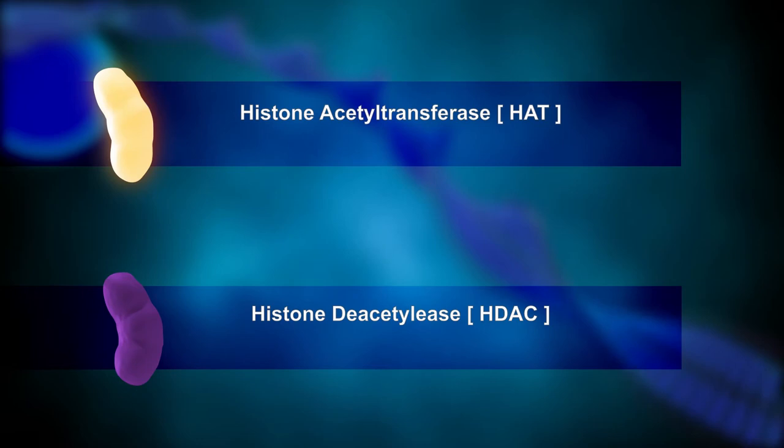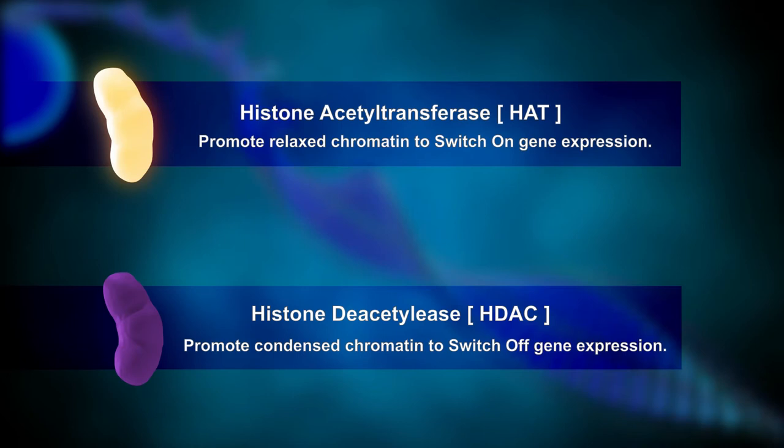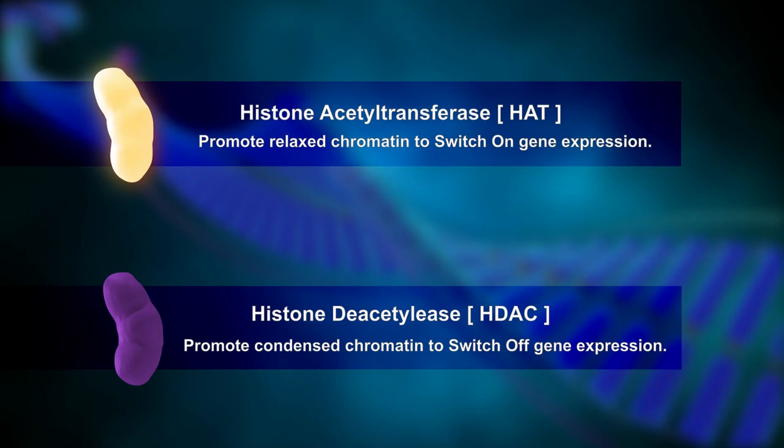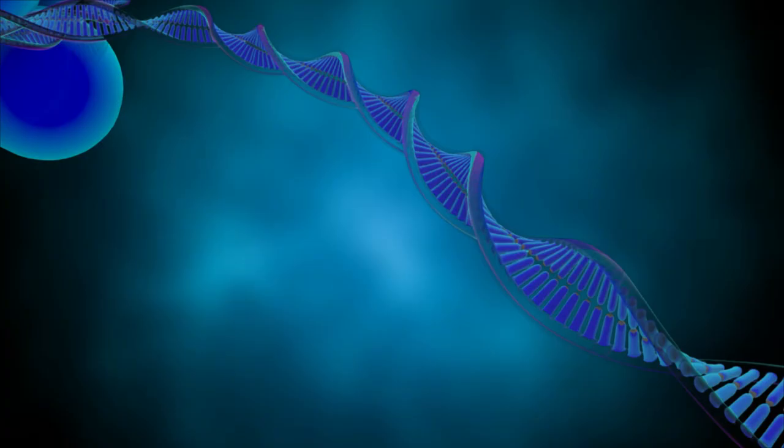Histone acetylation is a process that requires two key enzymes, HATs and HDACs, to tag or remove acetyl groups from the end terminal tail of histone, thereby activating or deactivating the genes involved in repairing the damaged DNA, as well as the cell proliferation and migration.